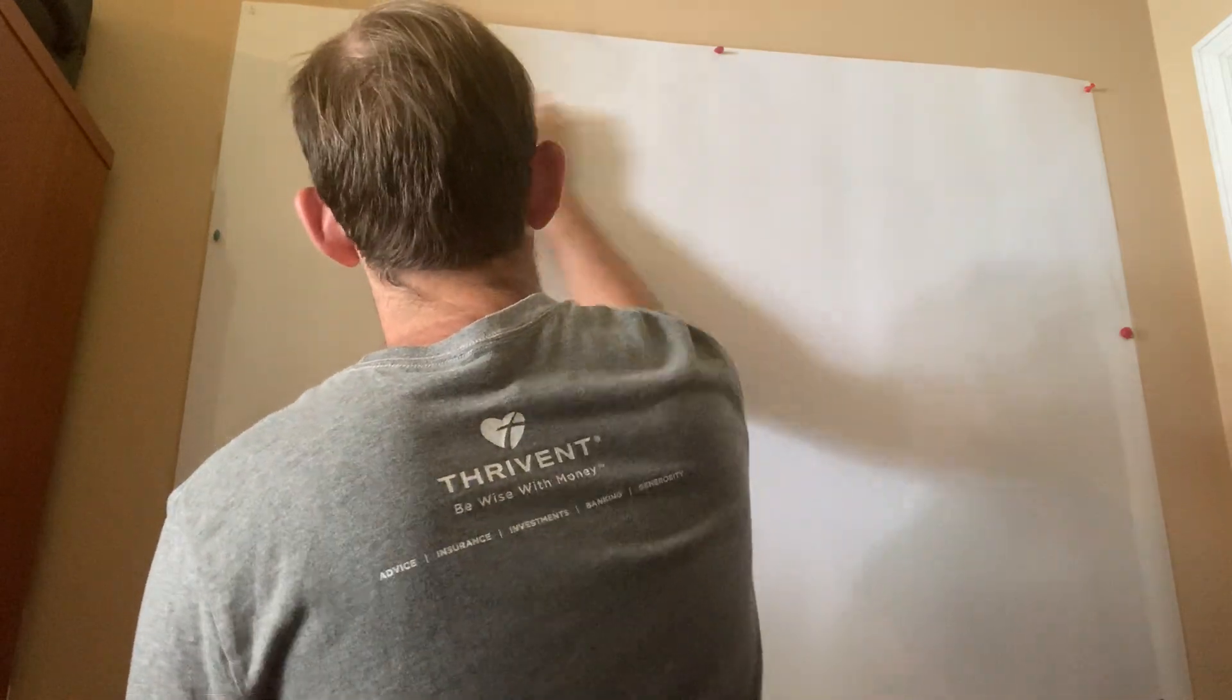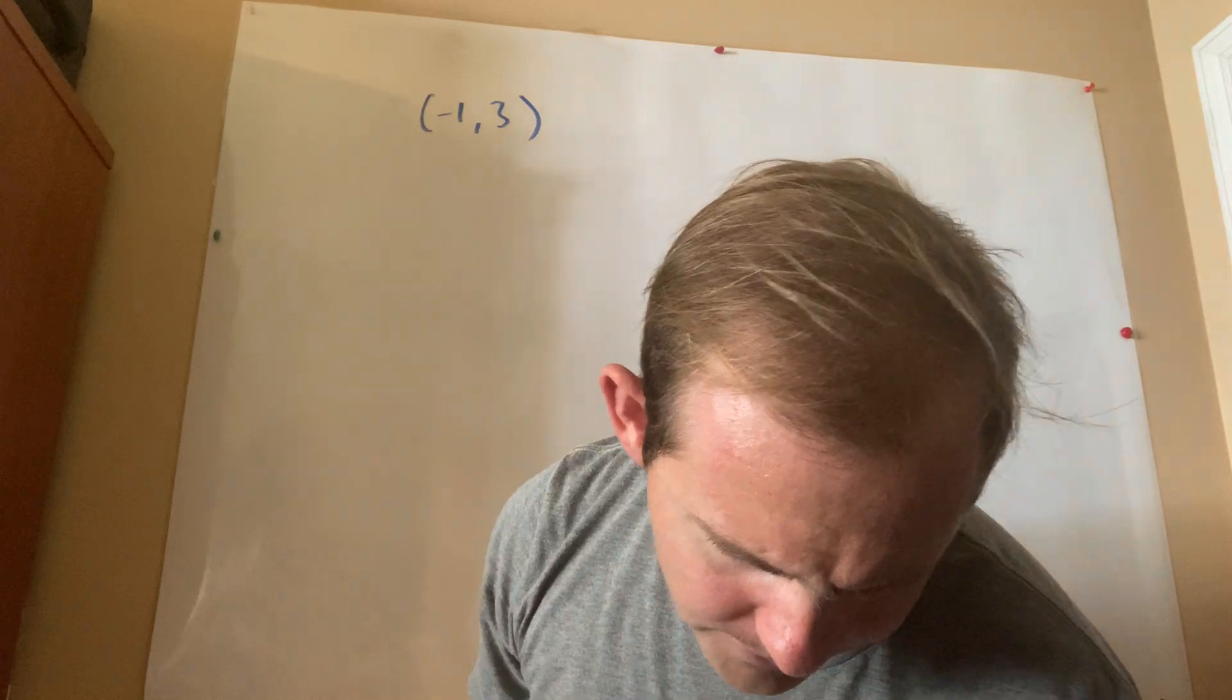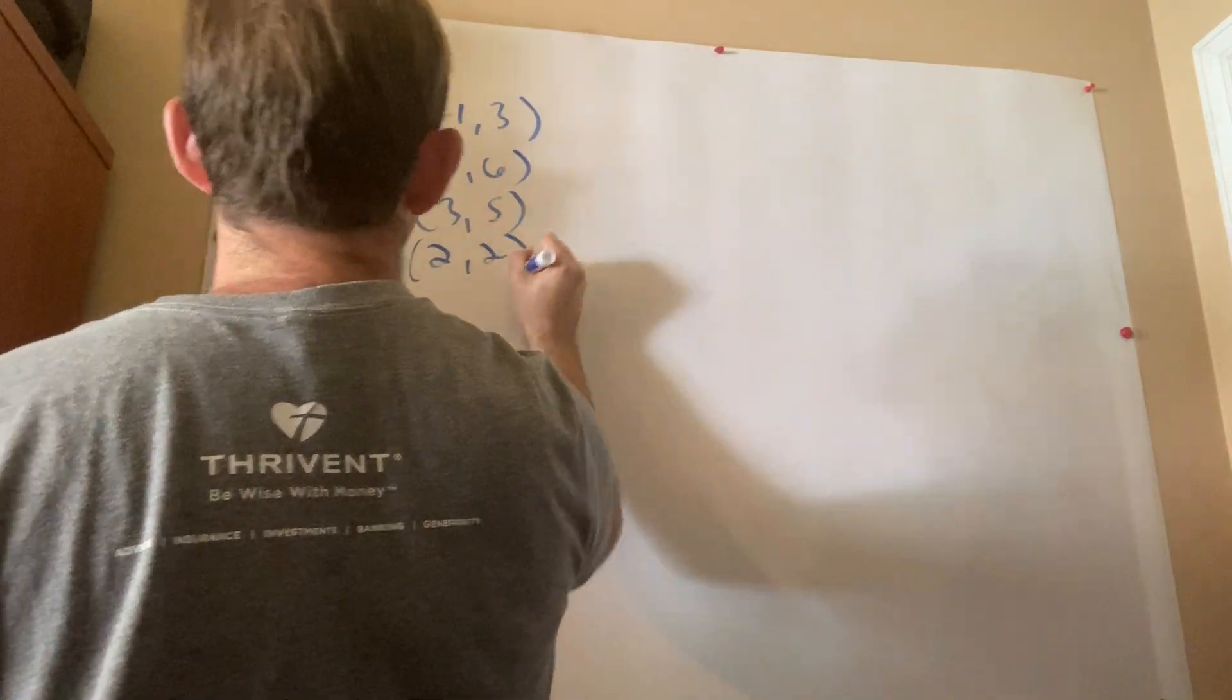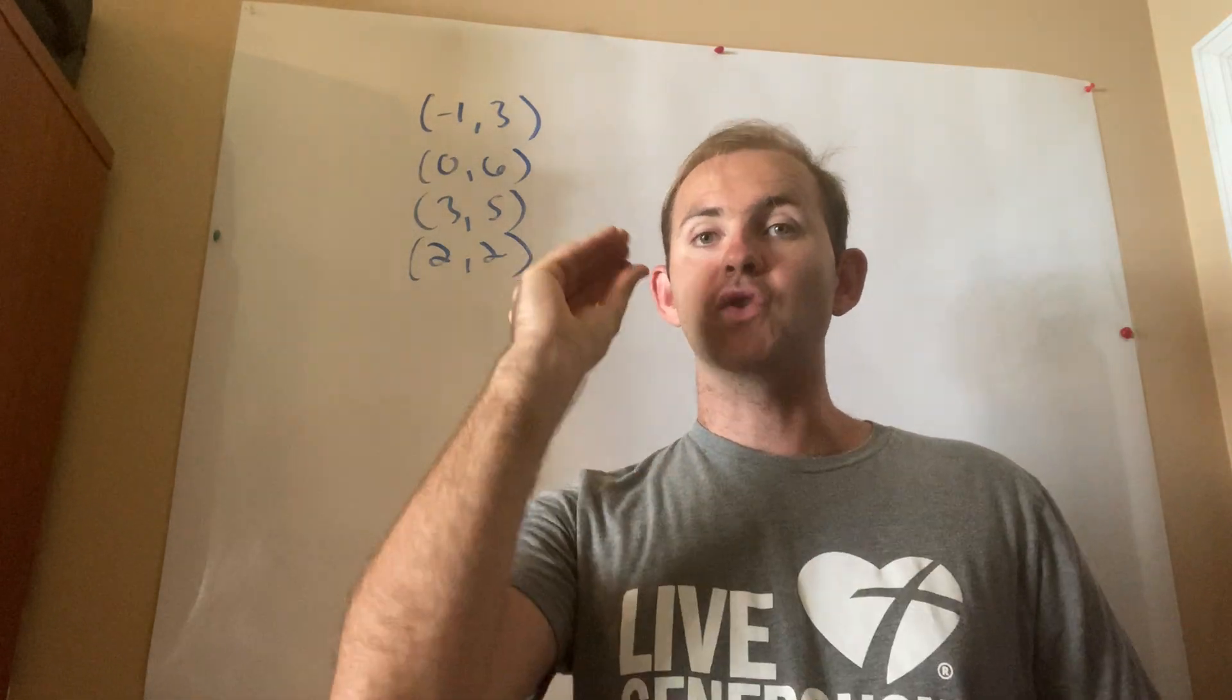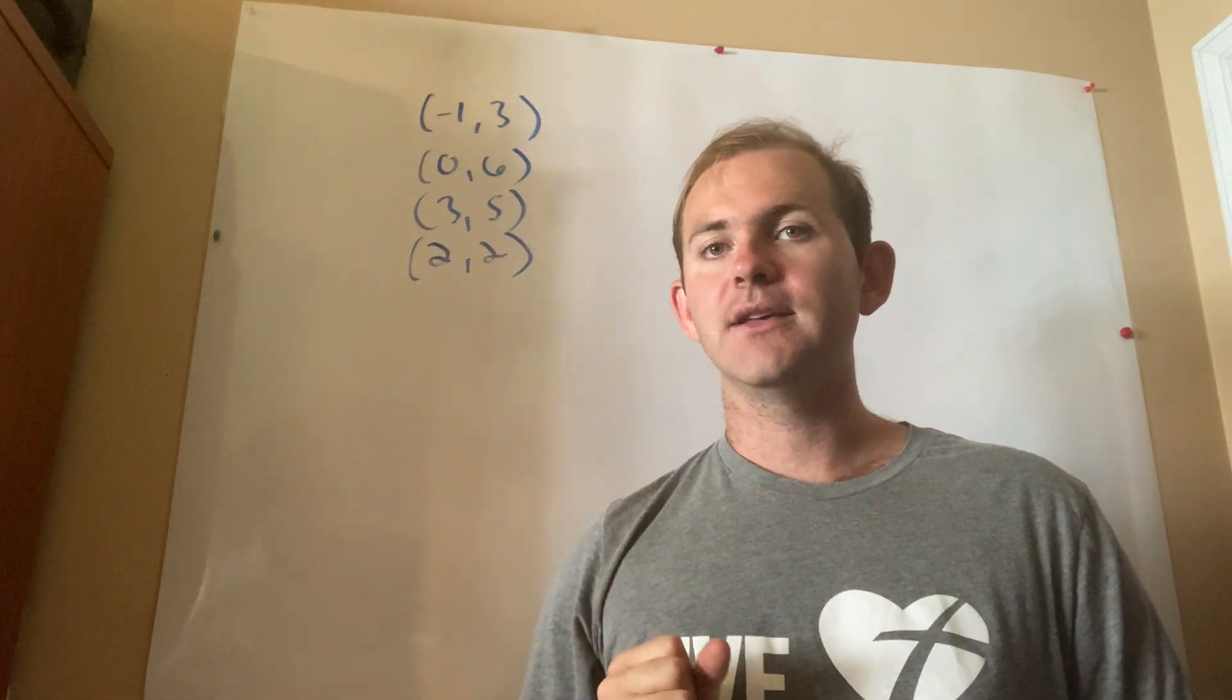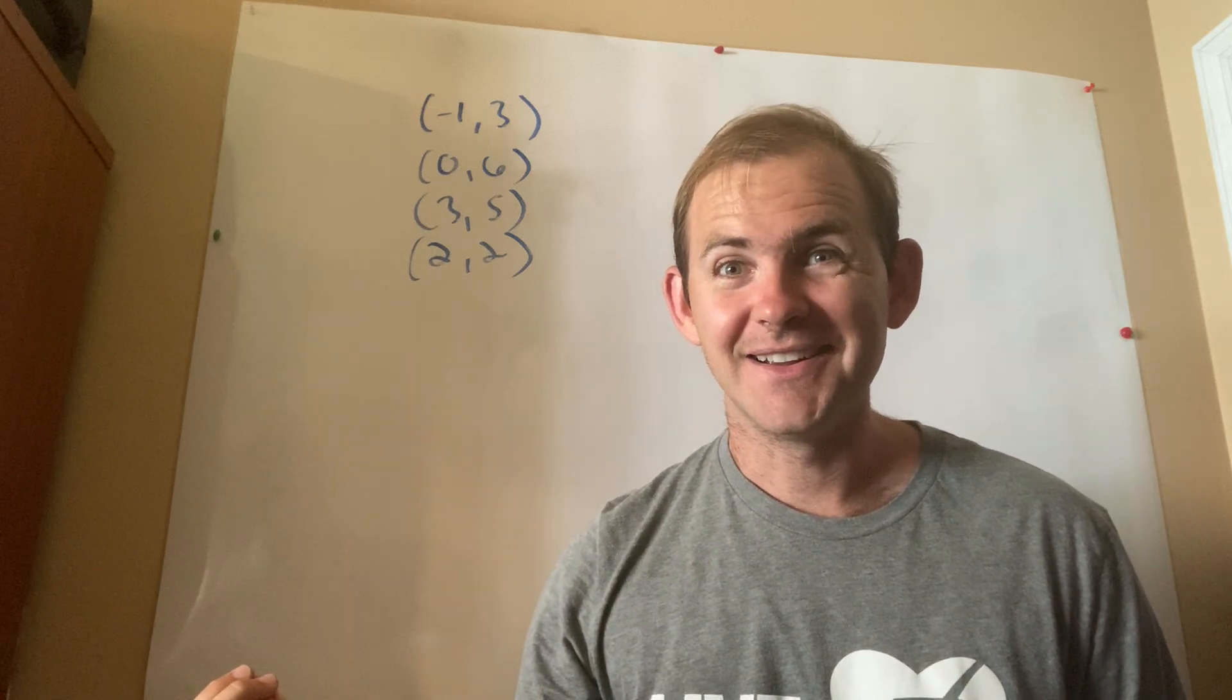All right. So I'm just going to write down the coordinates, if that's okay with you guys. Now, in order to perform this particular reflection, I need to have my coordinate rule memorized. The coordinate rule for a reflection over y equals negative x, this is what I think of as the switch and negative.